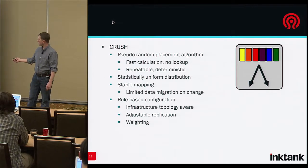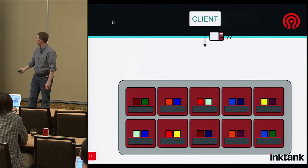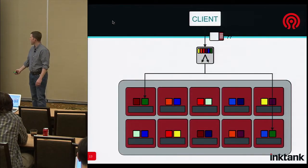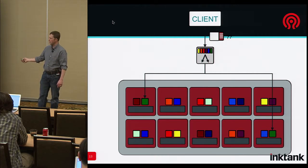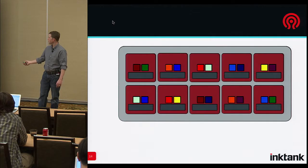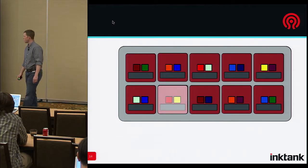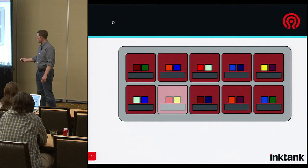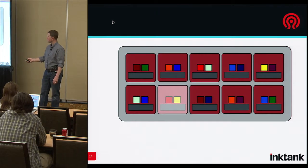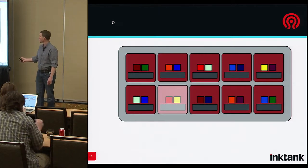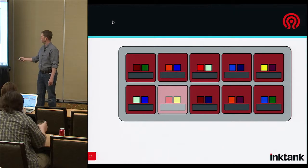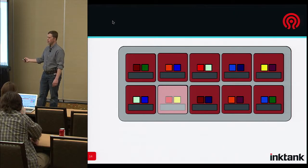More detail about what CRUSH does. Now, what happens when we're doing a read? It doesn't do any sort of lookup. It calculates that locally on the client. But what happens when there's an outage? So before, my rules said I had to have one original, one copy, and that they couldn't be — for example — in the same host.